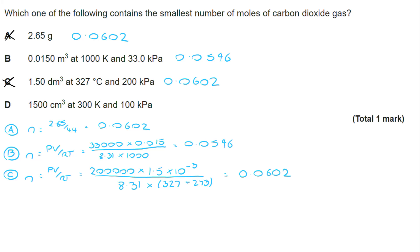And finally, I look at D, which is ideal gas again. In this case, I've got to convert my cm cubed to metres cubed. I do that dividing by a million. And I've got to convert my kilopascals once again to pascals. And when I put all of those figures in once again, I get 0.0602. So the correct answer, the one that's lower than all of the other three, is B.